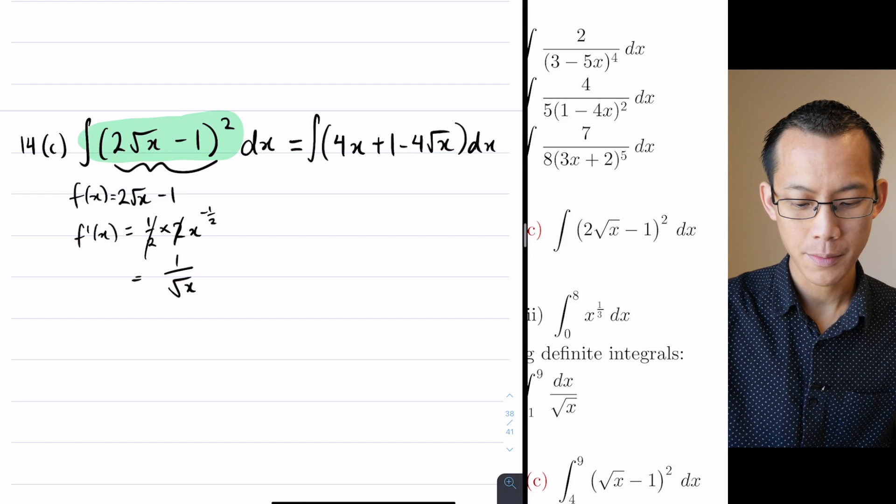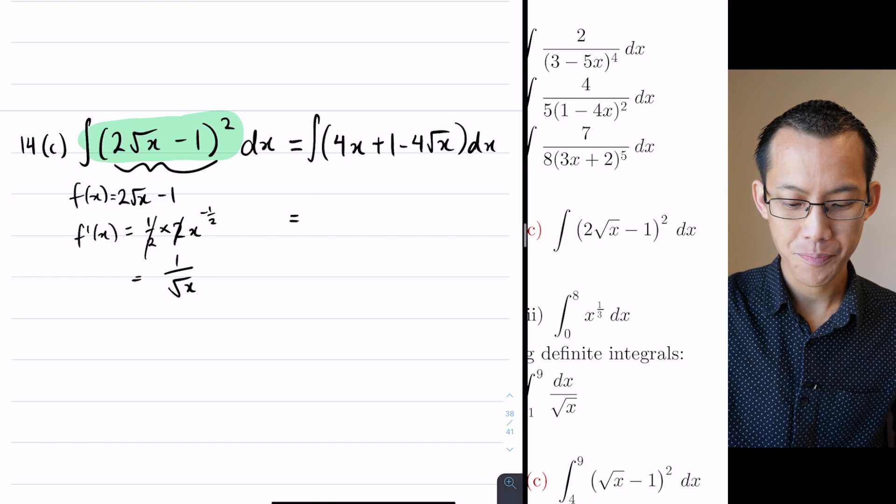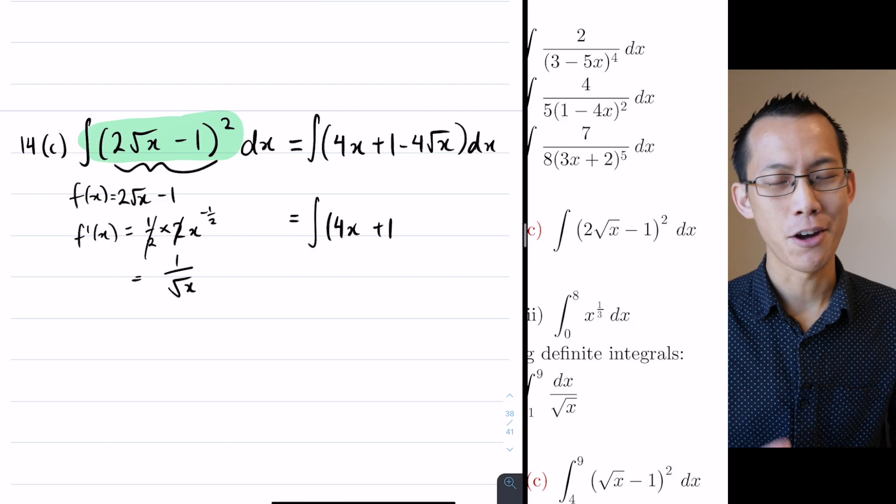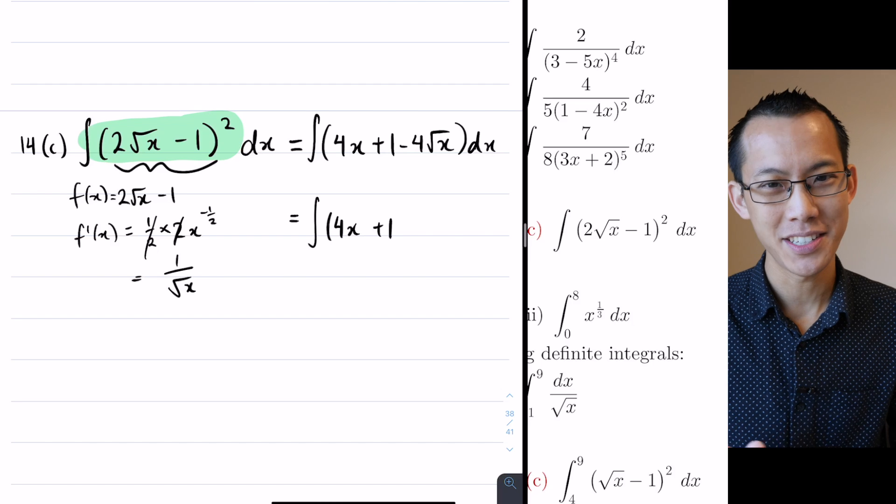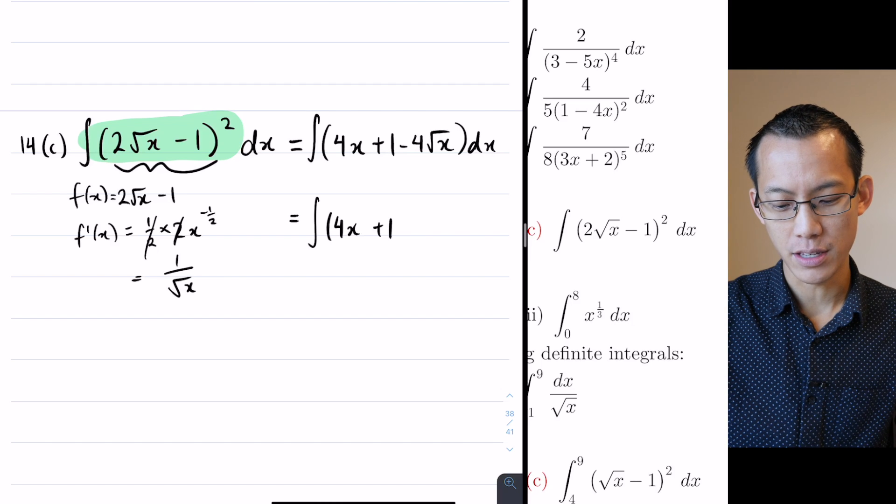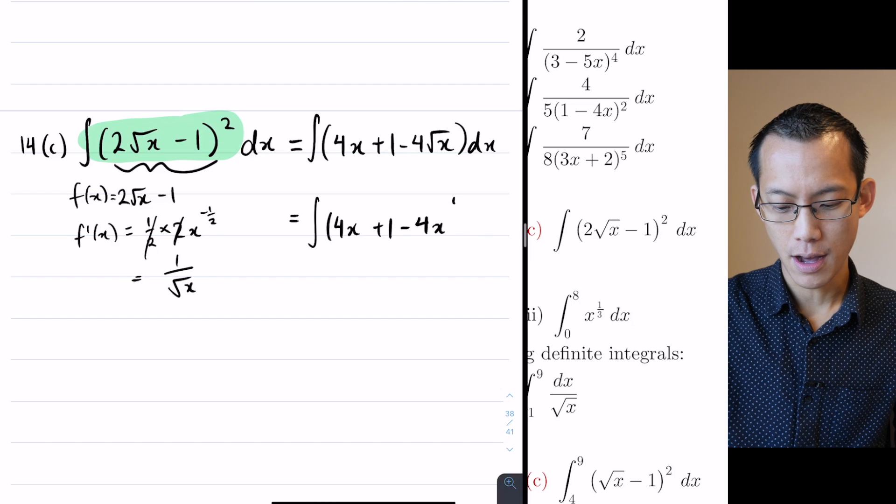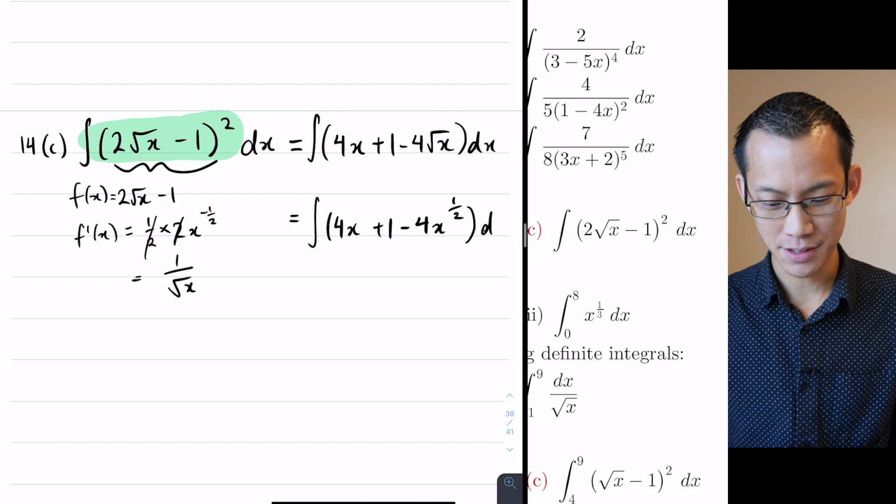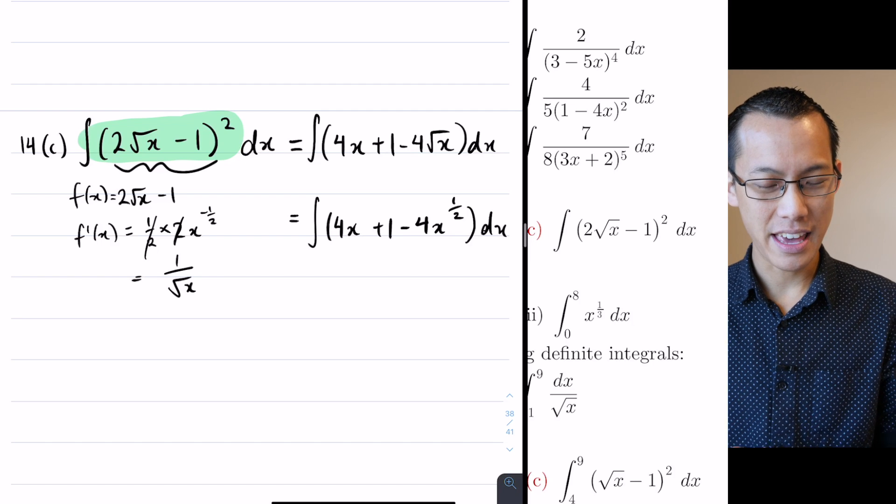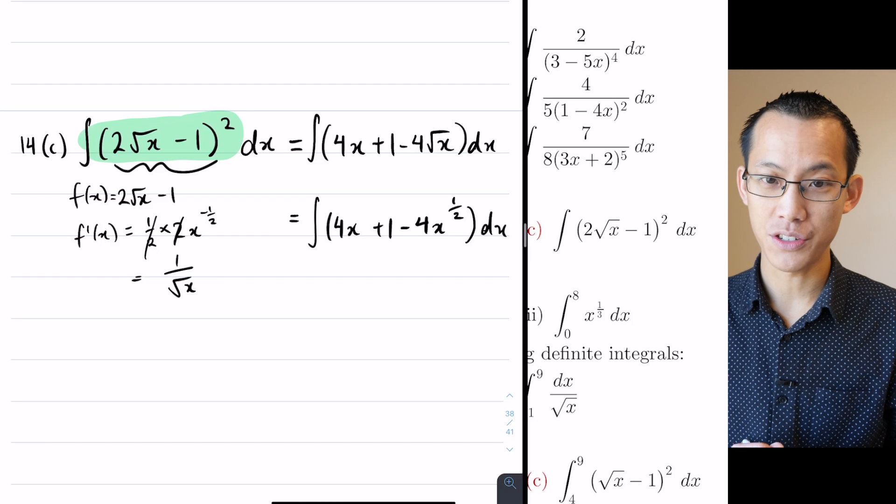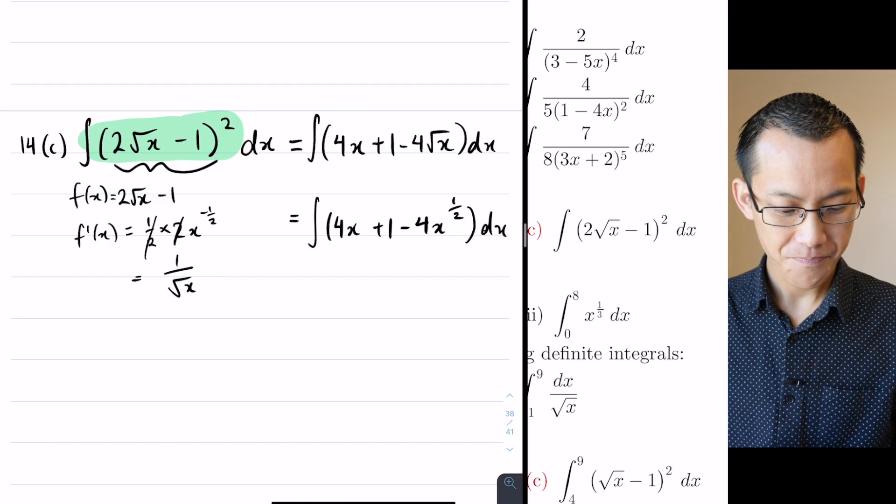I haven't actually done any integration at this point, I've just expanded. But I'm still not ready yet, at least in my brain, to integrate this. I'm going to do one more thing. So I still have my integral sign there. That 4x looks good, the plus 1 looks good, but that 4 root x, I want it in index form so I can use the rules that I know. So I'm going to write this as 4x to the power of a half. Now, I'm ready to integrate, and hopefully you are too, so I'm going to leave that one sitting there for you guys to have a go at.